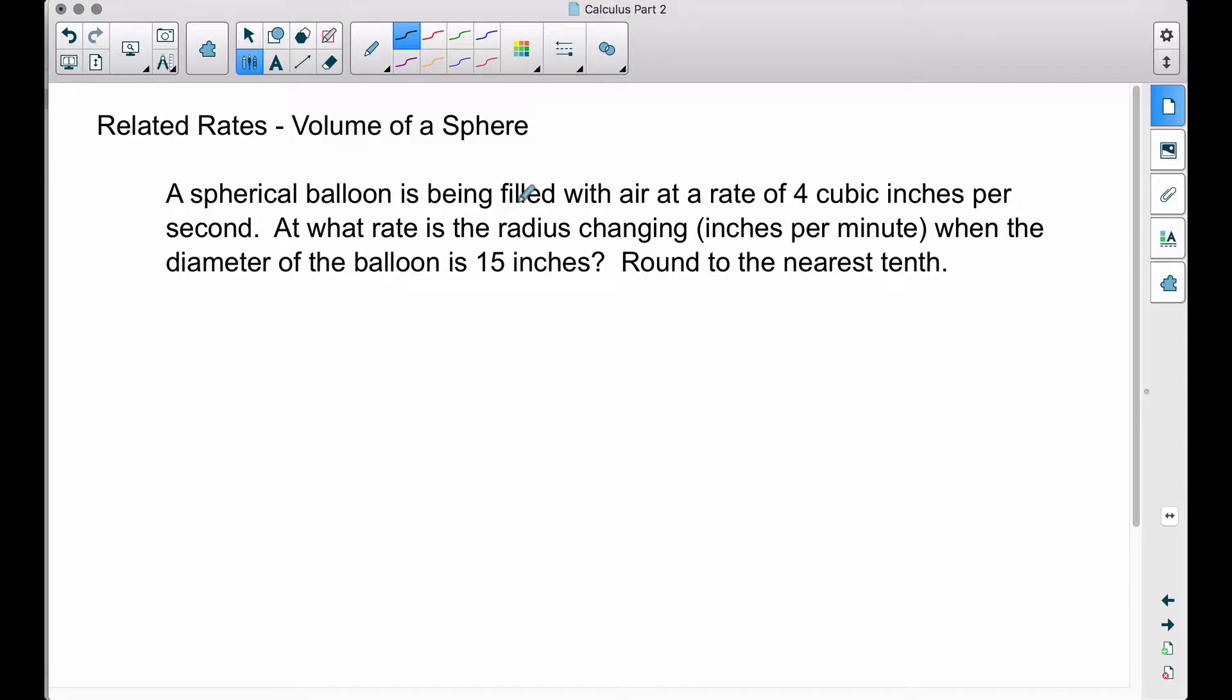A spherical balloon is being filled with air at a rate of 4 cubic inches per second. At what rate is the radius changing in inches per minute when the diameter of the balloon is 15 inches? Round to the nearest tenth.